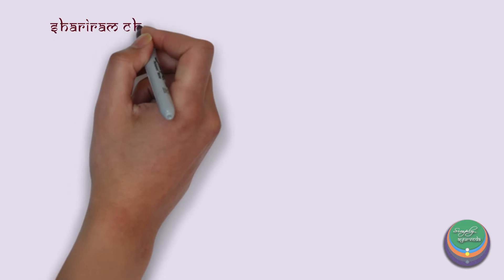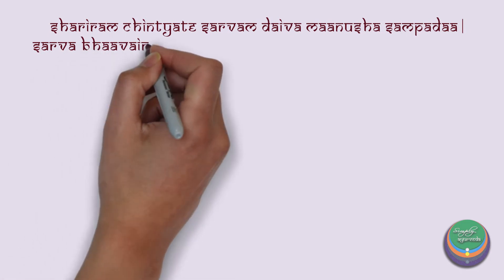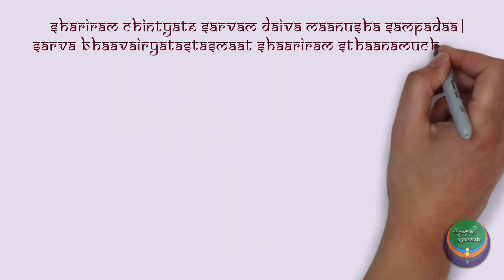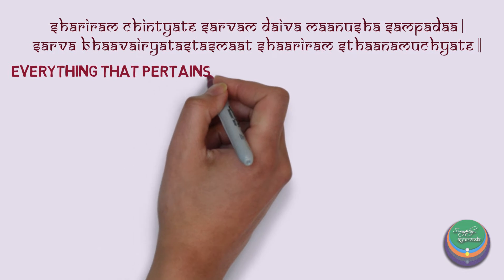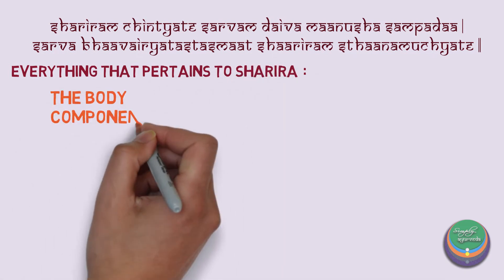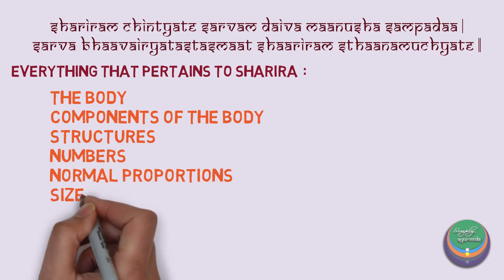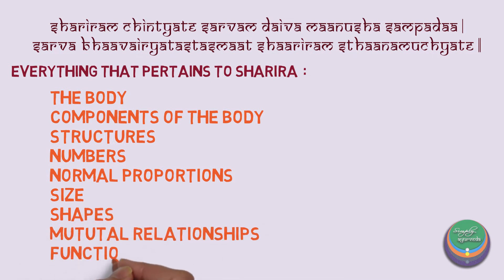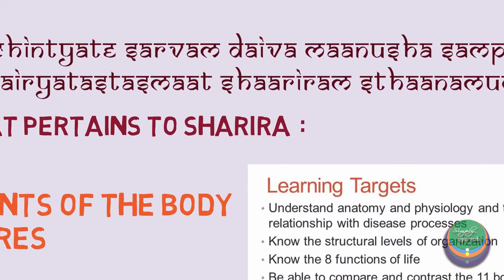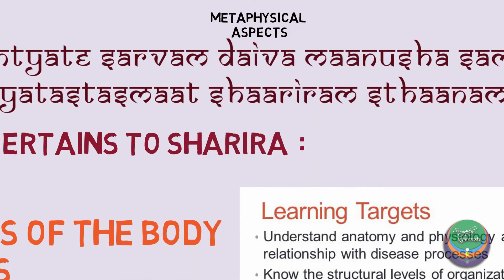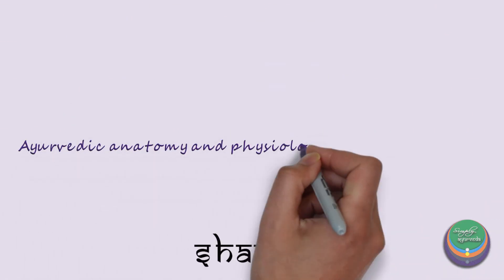Sharira chintyate sarvam taiva manusha sampada sarvabhavai hi yatas tasmaat sharira sthana muchyate. According to Acharya Charaka, all the divine and human resources pertaining to Sharira — that is, the body, its components, their structures, their numbers, their normal proportions, size, shape, mutual relationships, and the functions they serve — is explained in the best possible way in Sharira Sthana.